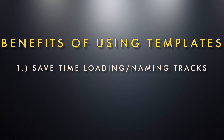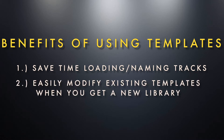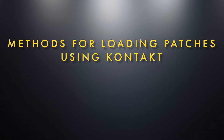You don't have to do that every time you load a new project. And if you have an existing template that you've already built and you want to add to it because you just got a new library, you simply open up that template, add those tracks, name them, save it as a new template, and you're ready to go. There are a couple of different methods you can use when building large templates using Kontakt.